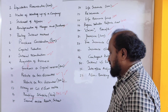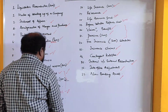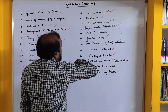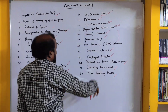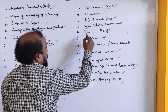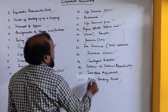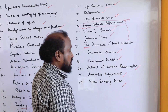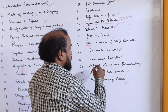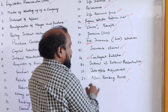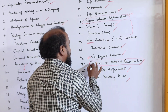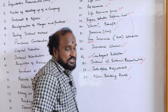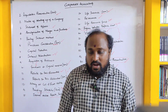You can also answer journal entries — how to write journal entries for rebate on bill discounted. For life insurance, some will be asked on life assurance fund, reinsurance meaning, preparation of valuation balance sheet, claims, benefits, and premium. Some fire insurance questions will be asked. Also contingent liability meaning, difference between internal and external reconstruction, inter-office adjustment, and non-banking assets — these are the various short answer topics.